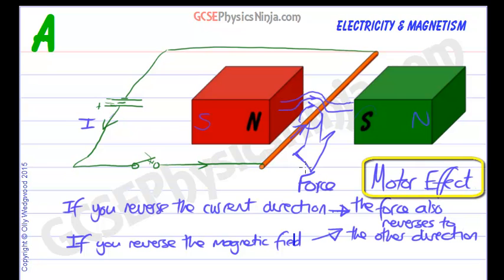So this is the motor effect and it's the basis of all electrical motors in the world. They all work because of this interaction between a current magnetic field and an external magnetic field causing a force and therefore the possibility of creating movement and motion from electricity and magnetism.